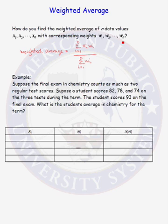So let's do an example. Suppose the final exam in chemistry counts as much as two regular tests. Suppose a student scores 82, 78, and 74 on the three tests during the term, and scores 93 on the final exam. What is the student's average in chemistry for the term?